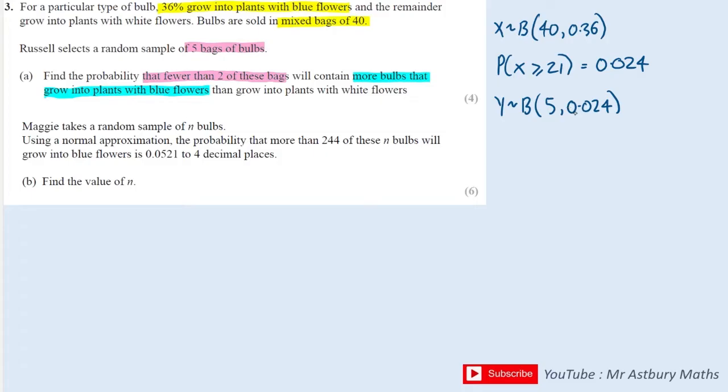What am I actually looking for? I'm looking for fewer than two bags containing this condition of having more than half blue. So fewer than two means just zero and one, so I'd write that as the probability of Y is less than or equal to one and we get the answer of 0.995.